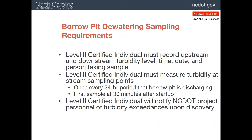As we've discussed, most borrow pits require constant pumping to bring down the groundwater level to allow for excavation. The discharge water will presumably end up in a nearby stream, so the level 2 person will need to record the turbidity, or muddiness, of the stream above and below the discharge point. This has to be done every day that the pump is actually running and within 30 minutes of pump startup. If the turbidity in the stream exceeds the limits, NCDOT needs to be notified.